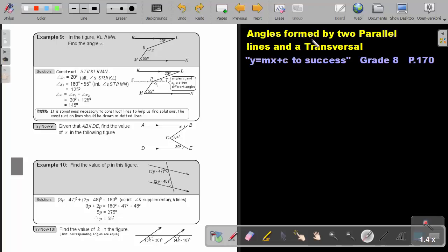Part 8: Angles formed by two parallel lines and a transversal. You will find this on page 170 in the Namibia Mathematics Grade 8 textbook, Y equals MX plus C to success.